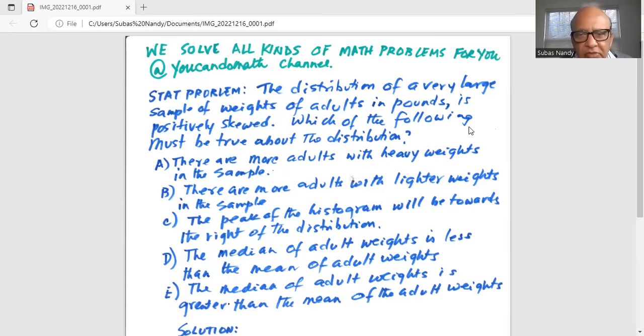C) The peak of the histogram will be towards the right of the distribution. D) The median of adult weights is less than the mean of adult weights. E) The median of the adult weights is greater than the mean of the adult weights.